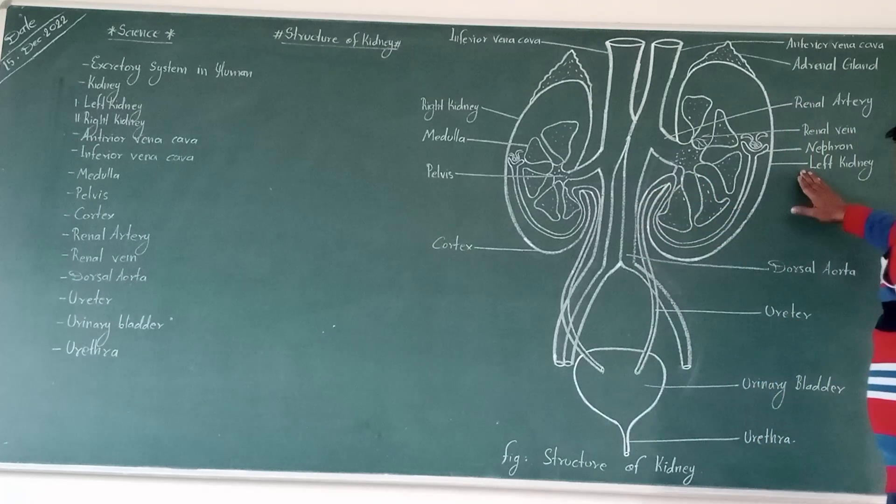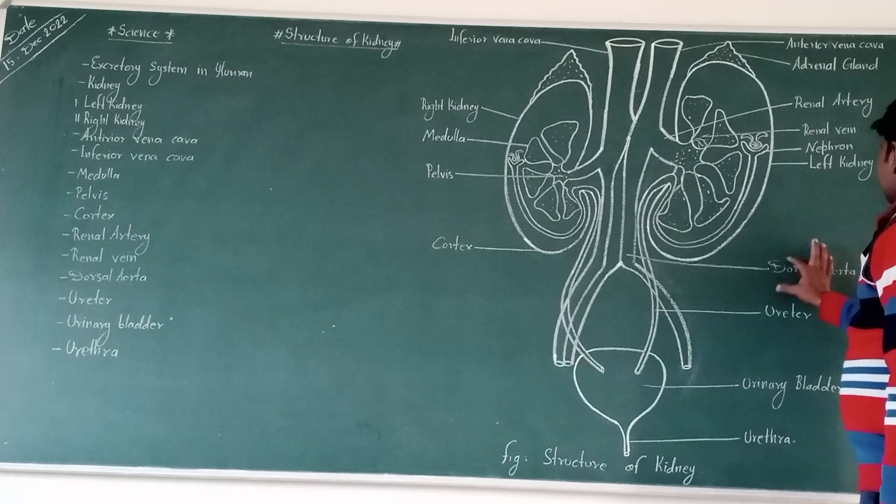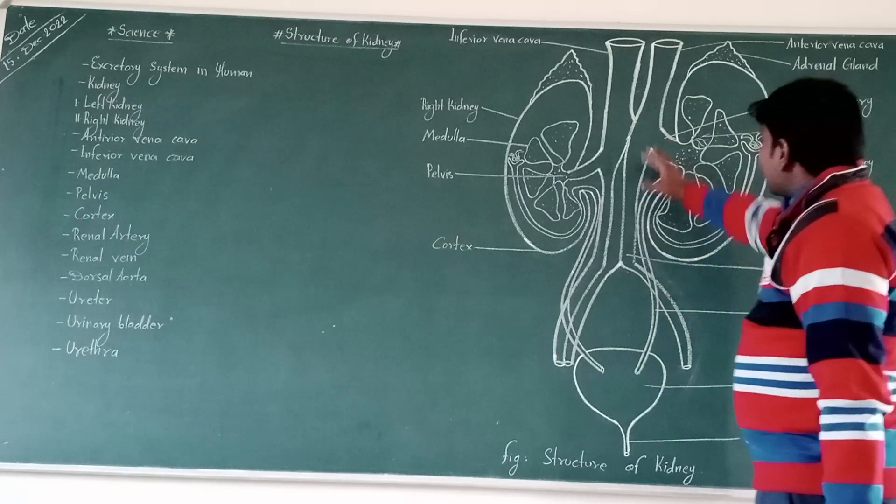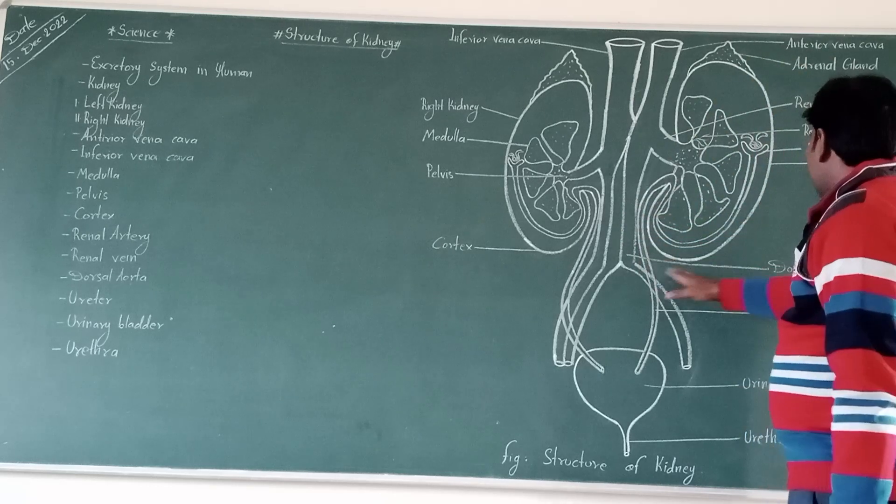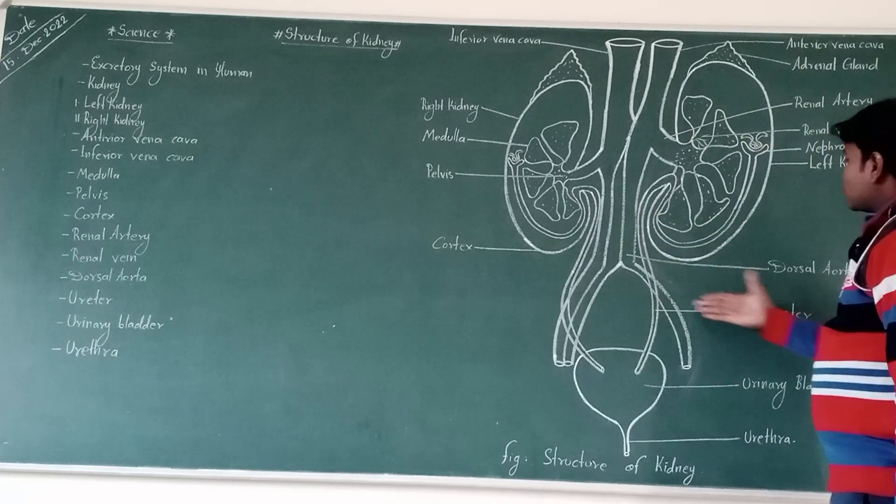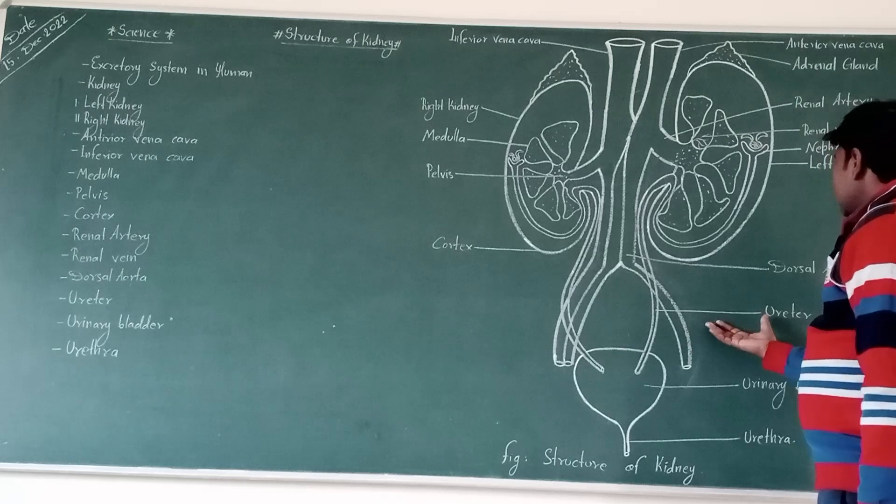And next, it is the dorsal aorta. Dorsal aorta are the lowermost part of the anterior vena cava, and it exists of the flow of your blood.